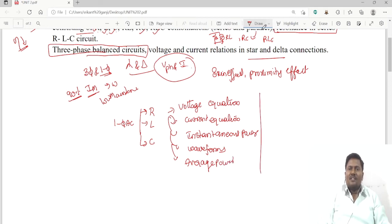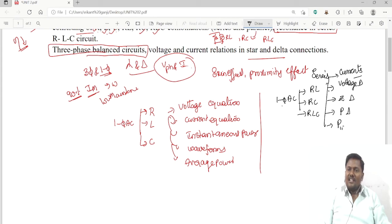If a single-phase AC supply is given to RL series circuit, RC series circuit, and RLC series circuit - this is for the series combination - we can go for the voltage triangle. Currents we are representing in a phasor and voltage triangle, and after that impedance triangle and power triangle, instantaneous power, waveforms, and the average power.